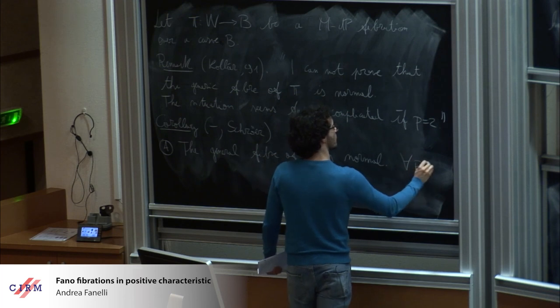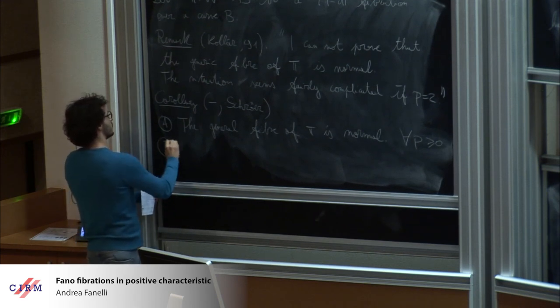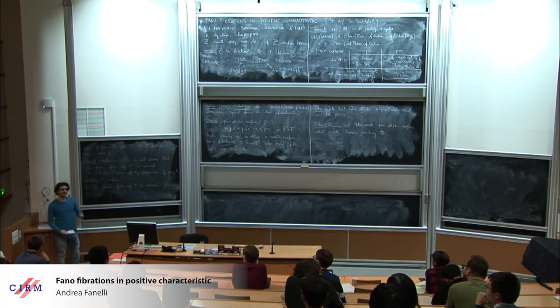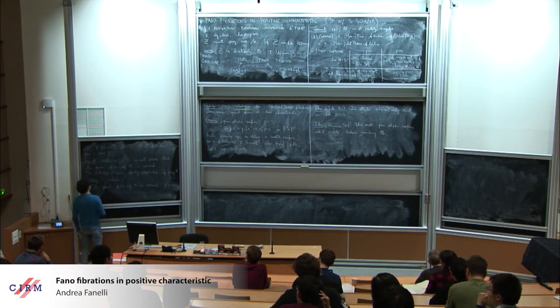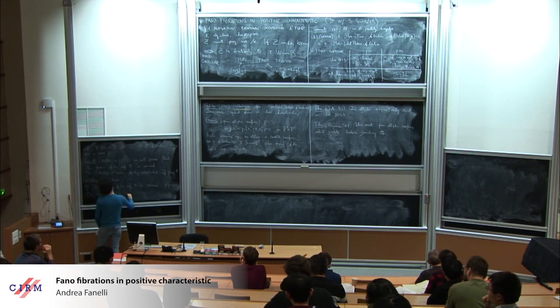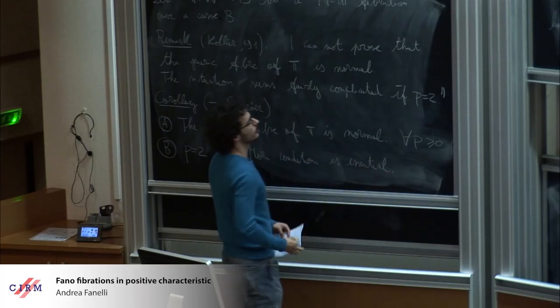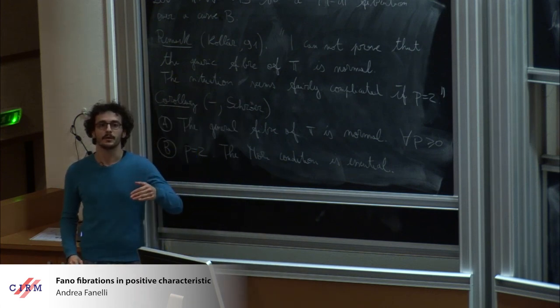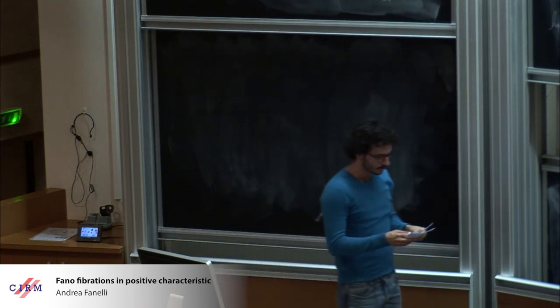So, the generic fiber is normal. And he also adds that the situation seems fairly complicated if p is two. And so, a corollary of a theorem which I will write shortly after, this is with Stefan. So, point A is that the generic fiber is normal. So, let's say a yes to the question of Kolar for every characteristic, even characteristic zero. And B, if p is two, then actually it's almost a case that we could prove this theorem. Because if we modify slightly the hypothesis, we find counter-examples. So, let me say that the Mori condition is essential.